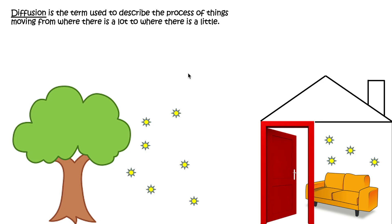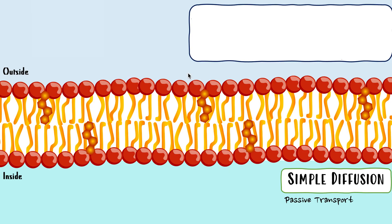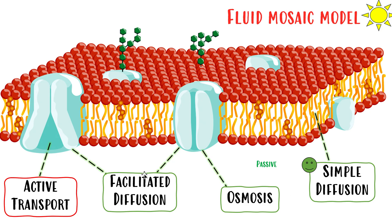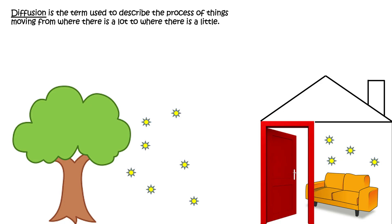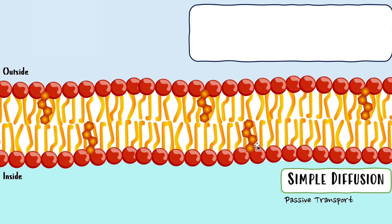If you understand diffusion, then understanding simple diffusion should be very straightforward. Here we have our phospholipid bilayer — the membrane of our cell. This area represents the outside of the cell, and this represents the inside. Simple diffusion is an example of passive transport — it requires no energy. The first key thing to know: simple diffusion involves only the membrane. Notice there are no proteins involved. So thing one: it's simply a membrane with no proteins.